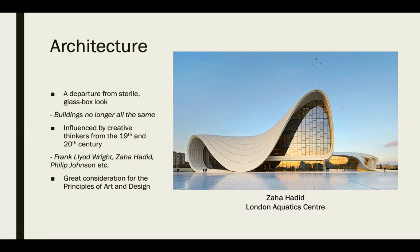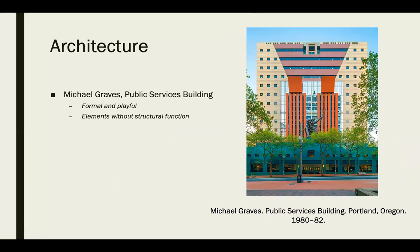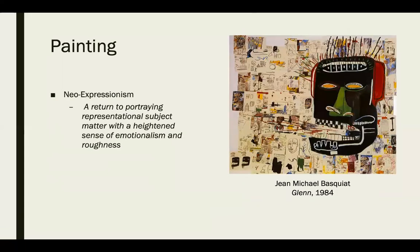In contemporary architecture there's a departure from the sterile glass-box look of international style. Creative thinkers like Frank Lloyd Wright, Zaha Hadid, and Philip Johnson are major influences. Zaha Hadid's London Aquatic Centre shows great playfulness, balance, and symmetry and asymmetry — a real consideration of applying principles of art and design into architecture in ways not done before. Michael Graves's Public Service Building plays with color, symmetry, and essential design elements like varied windows.